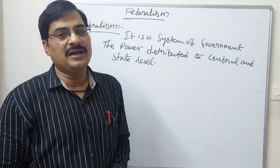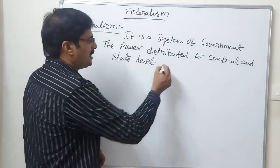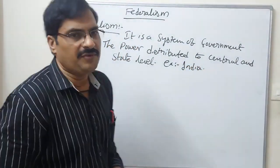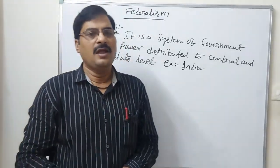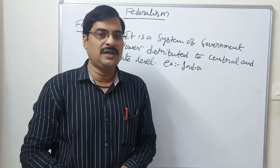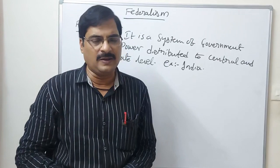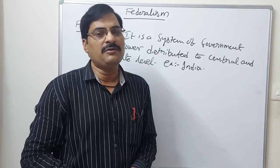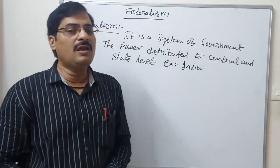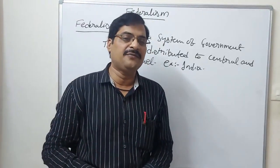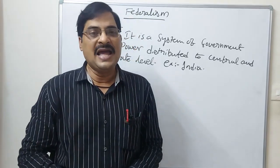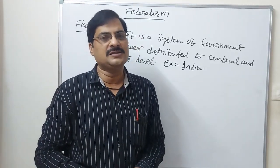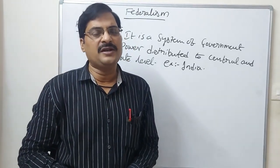According to Federalism, the best example is India. India is following Federalism strictly because we have 28 states, and all these states have one head at the central level. Many countries follow the Federalism system. We have different kinds of religions, caste systems, and languages, yet we follow Federalism strictly. That is why the best example of Federalism is India.